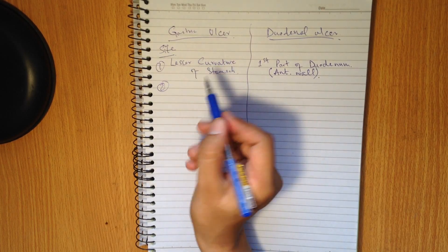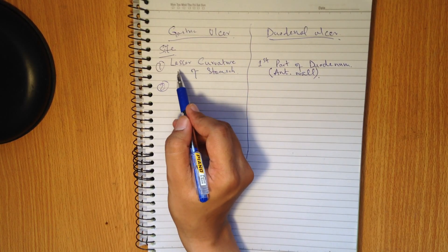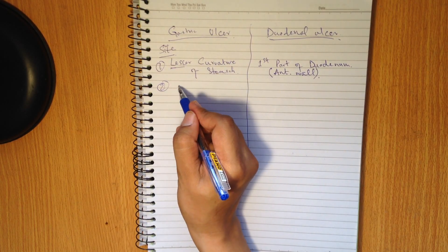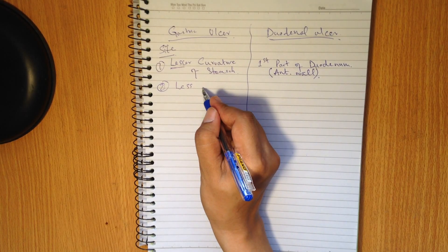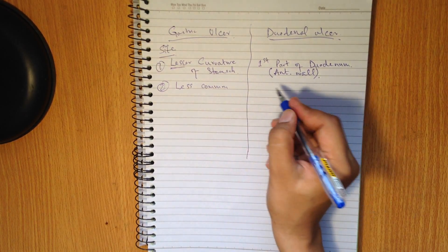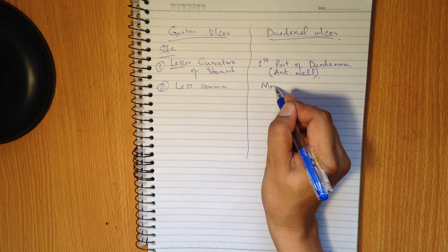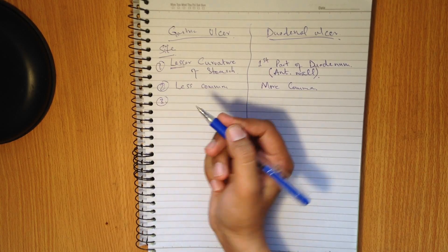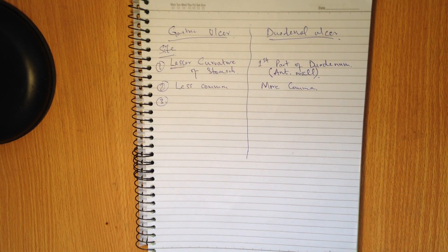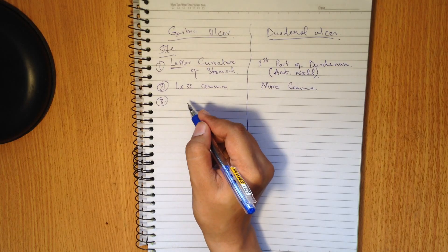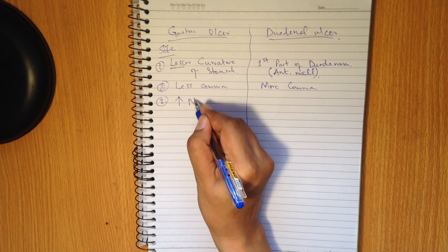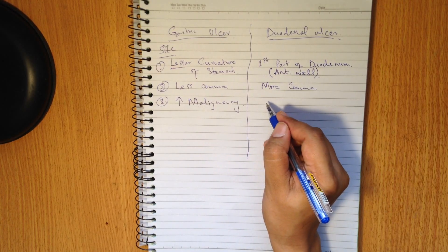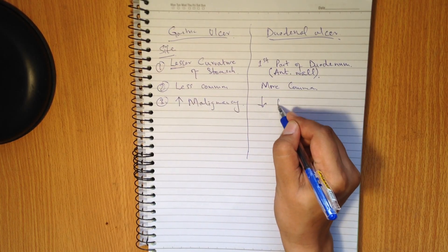You should remember that gastric ulcer is present on the lesser curvature of the stomach — gastric ulcer is less common and duodenal ulcer is more common. Another thing to remember: there are increased chances of malignancy in gastric ulcer, whereas in duodenal ulcer there are decreased chances of malignancy.